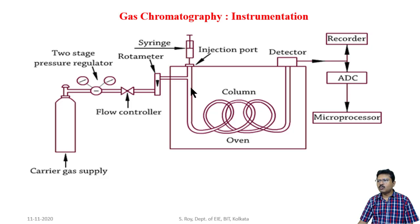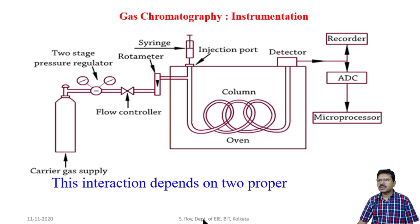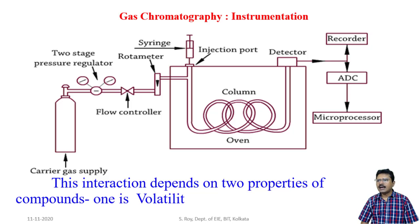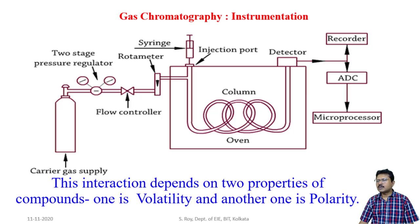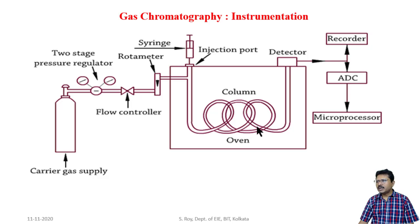The component which has more interactive property with the column will have less speed and will take more time to traverse the path of the column. The interaction depends on two properties: volatility and polarity. With respect to these two characteristics, the interaction time with the column for different components will be different. According to retention time, one component will reach the outlet of the column faster, another will reach at a later time.